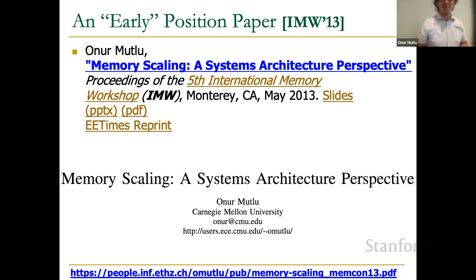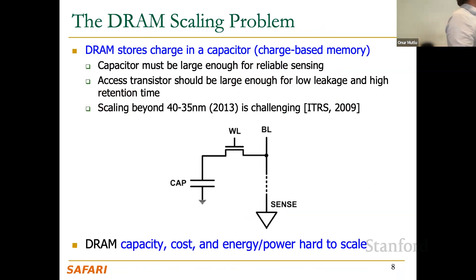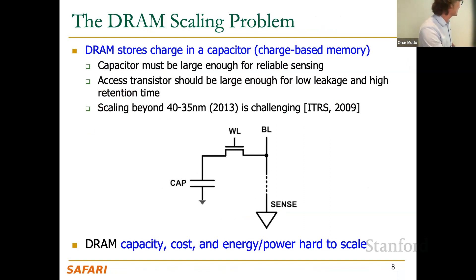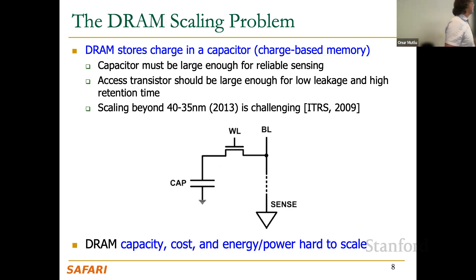We've been working on memory reliability problems for a while. I was invited to give a talk at the International Memory Workshop in 2013 where we argued these problems are going to get much worse and we'll need to take a systems and architectural perspective to solve them. We're going to focus on DRAM — DRAM stores charge in a capacitor, with a storage device and an access device. As you reduce the size of the circuit, maintaining reliability becomes a challenge; you get a lot of noise, and capacity, cost, and energy were hard to scale in DRAM.